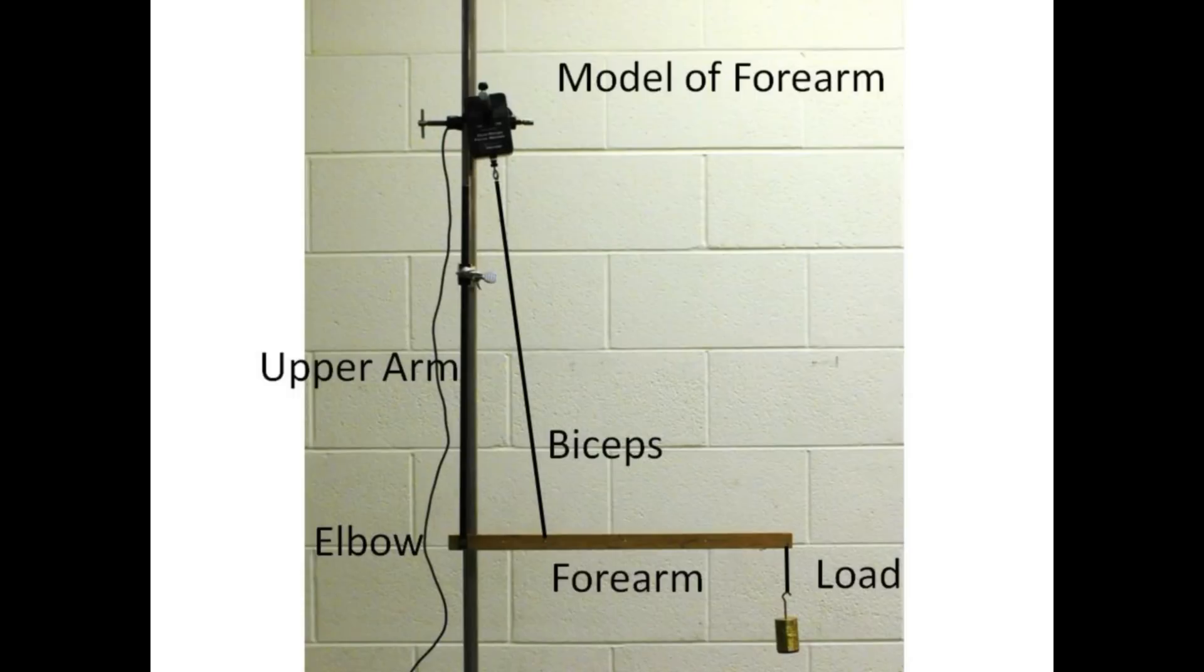In the first arrangement, the upper arm is at right angles to the forearm, giving the biceps a nearly perpendicular angle to produce a large amount of torque with minimal tension.